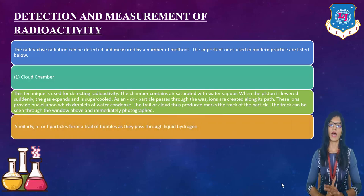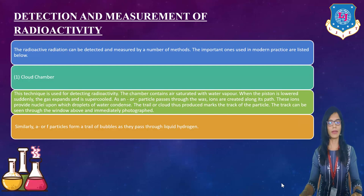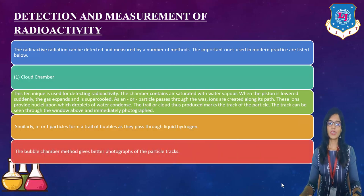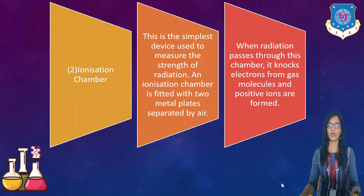So in this way you can detect it. Similarly, alpha or beta particles form a trail of bubbles as they pass through liquid hydrogen also. So in that manner also it can be detected. The bubble chamber method gives better photographs of the particle tracks. That is also one of the important methods with which you can detect radioactivity, that whether in that particular environment radioactivities are present or not.